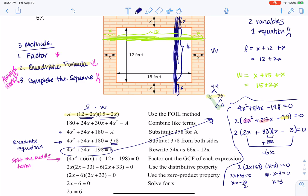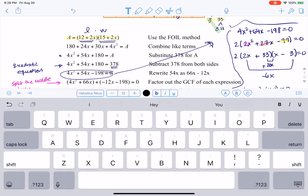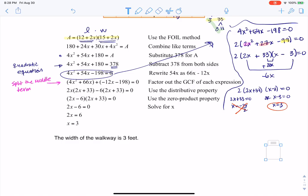And because x is a distance, I can't have it be equal to negative 33 halves. So my solution must be three. And because the units are feet, you can see that I put my answer here is three feet. So that's how we do 57. Thanks so much, gang. I'll see you later. Bye.